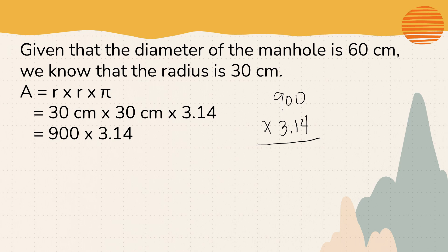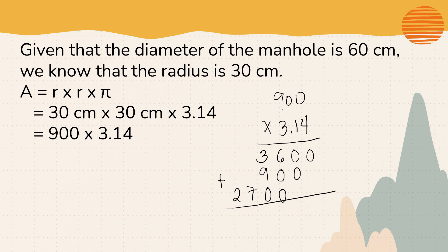So 900 times 3.14 — let us compute. Any number multiplied by 0 is equivalent to 0, so 4 times 0 equals 0, then 4 times 9 equals 36. Next, 1 times 0 equals 0, placed at the tens digit, then 1 times 9 equals 9. Next, 3 times 0 at the hundreds place equals 0, then 3 times 9 equals 27. So let us add the partial products: 0, 0, 6, carry 1, 8, 2 — following the rule of multiplication.